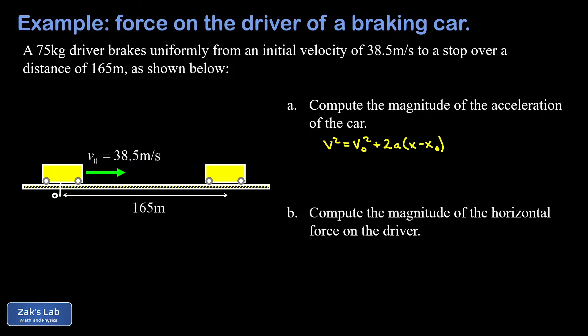So v is my final velocity and I know that's zero. v₀ was 38.5 meters per second. a is what we're trying to solve for here, and again, x minus x₀ is 165 meters. We're going to take 38.5 squared and subtract that from both sides, and then divide by twice 165.